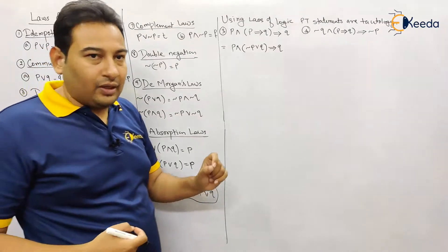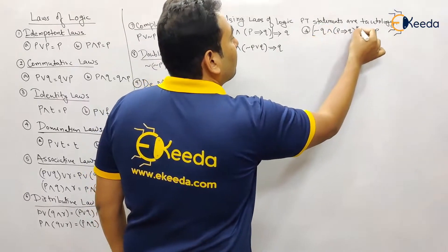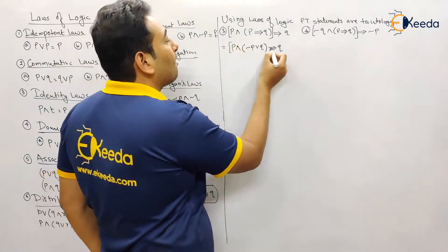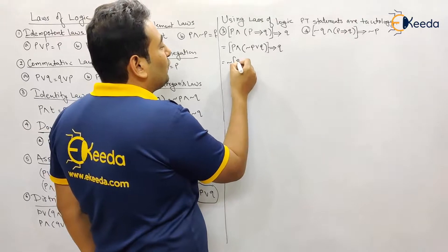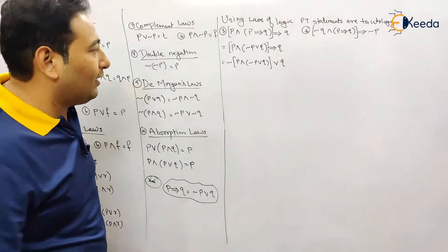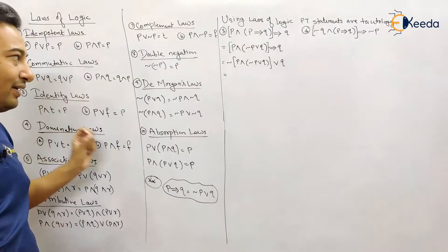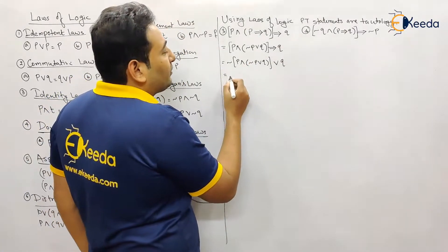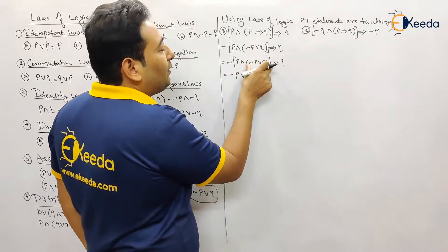The formula is: negation of the first term or second term. The first term here is the entire bracket. So this entire bracket is implying to q, making the first term the bracket and q the second term. Therefore: negation of (negation p or q) or q. Now let's simplify by taking the negation inside the bracket.